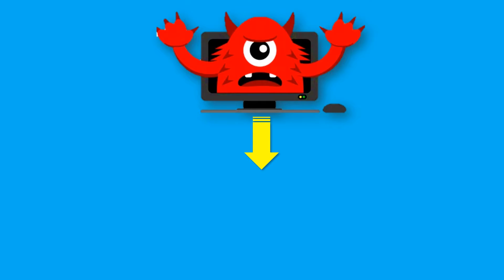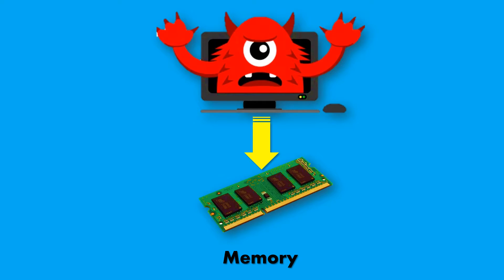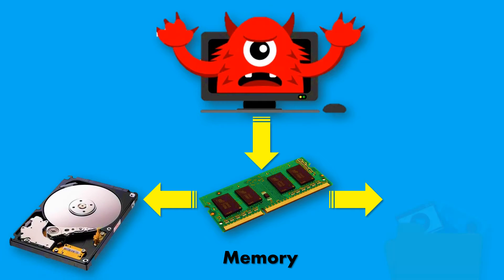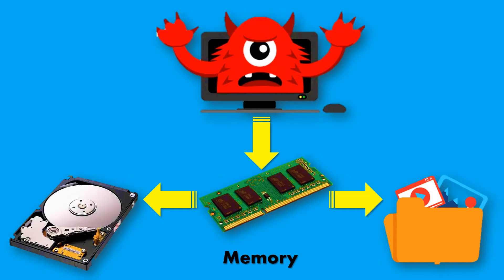Once a virus becomes active, it starts getting loaded and saved in the computer memory. It travels to the hard disk and system files and makes them corrupt. Virus programs are self-replicating and are continuously expanding their reach by infecting more and more computer files, resulting in loss of speed and destruction of data.